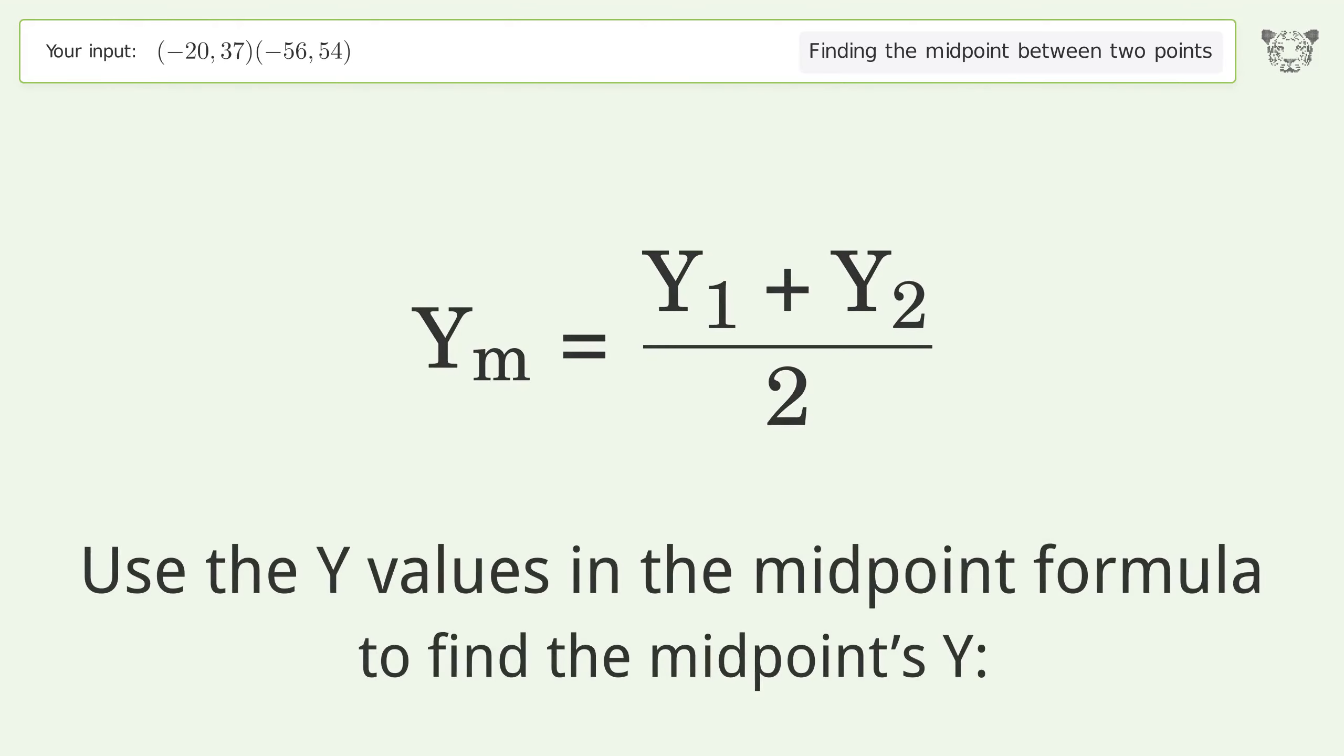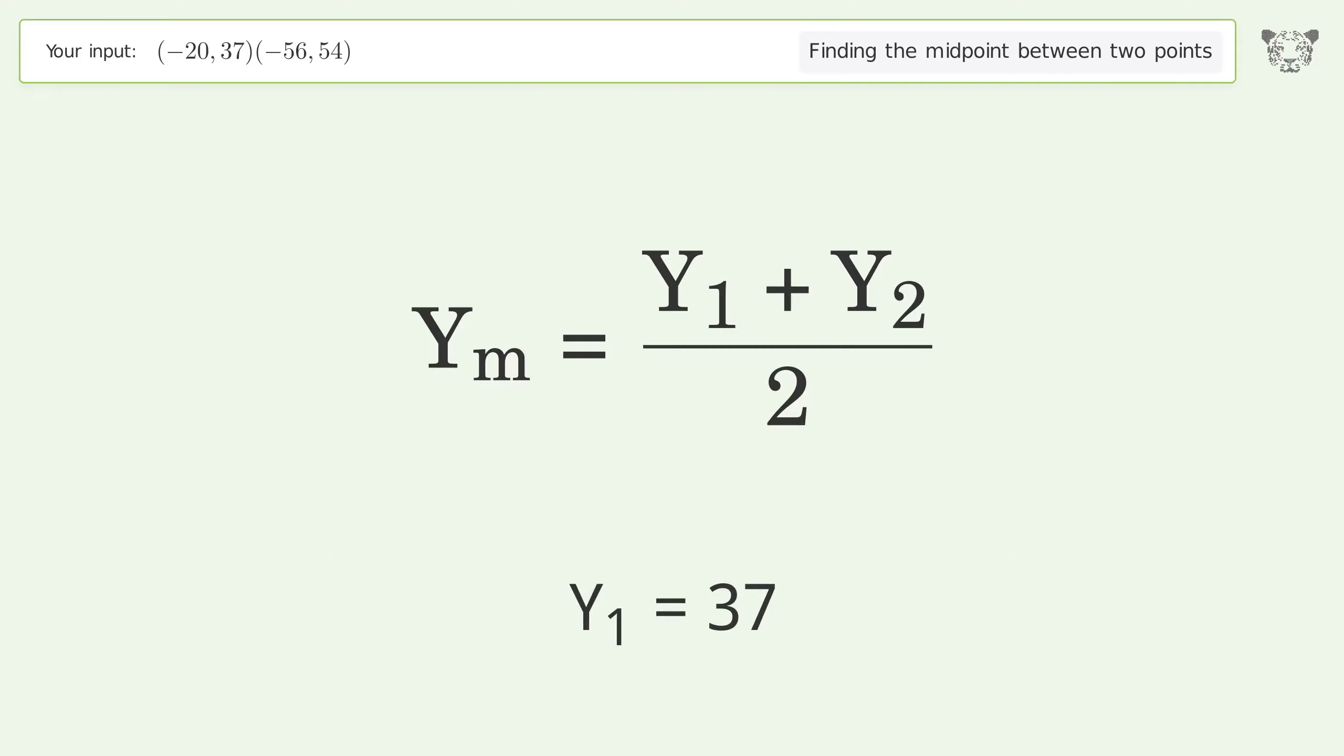Use the y values in the midpoint formula to find the midpoint's y. y₁ = 37, y₂ = 54. Simplify the arithmetic.